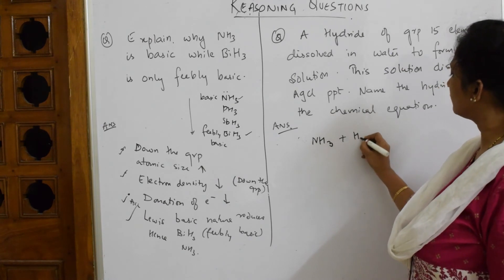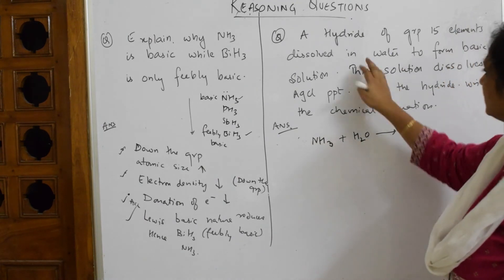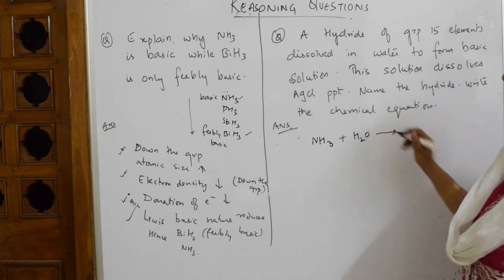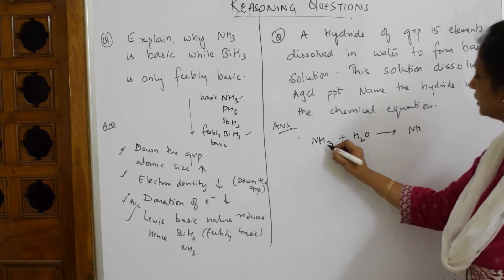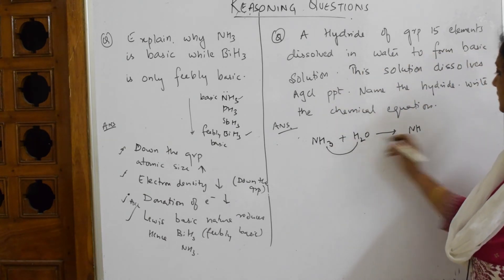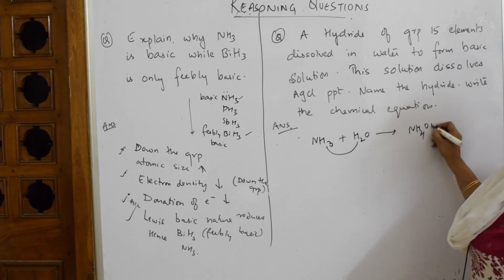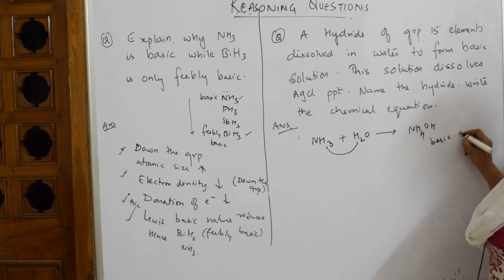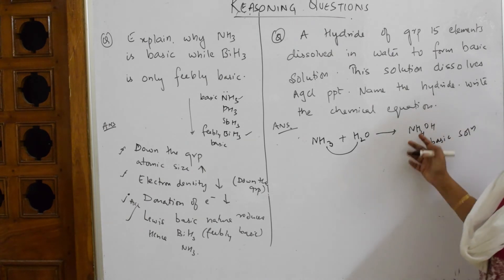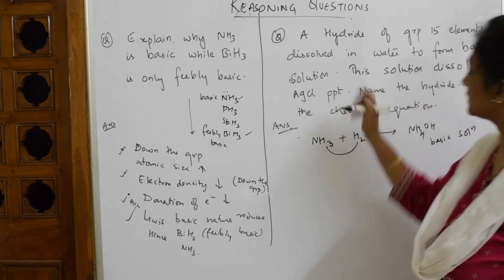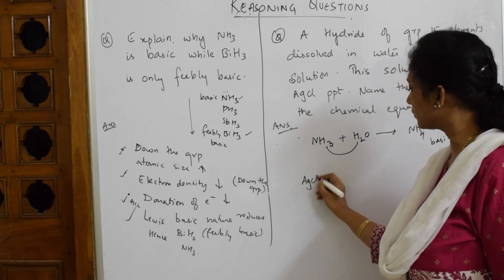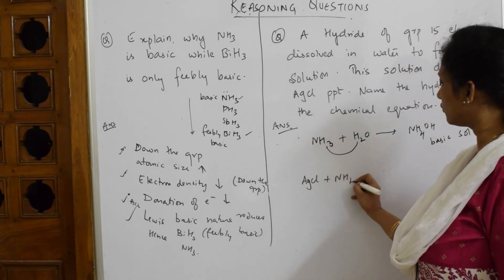They said it forms a basic solution in water. Ammonia dissolved in water: one hydrogen from here picks up, forming NH4+. The leftover is OH-. Now you have a basic solution. This basic solution dissolves silver chloride precipitate. Silver chloride when dissolved in water will form a complex.